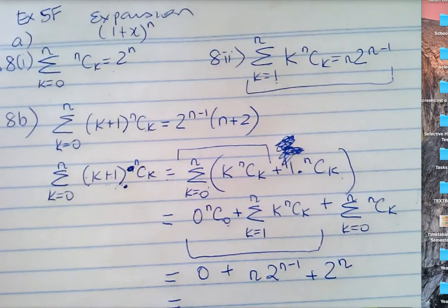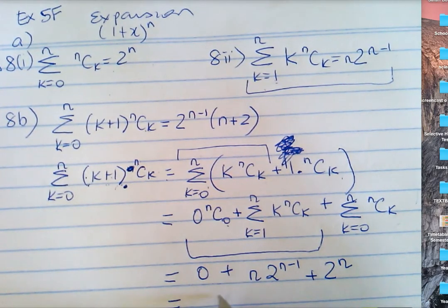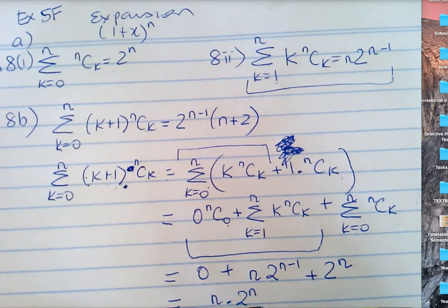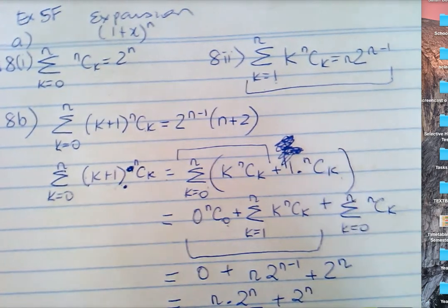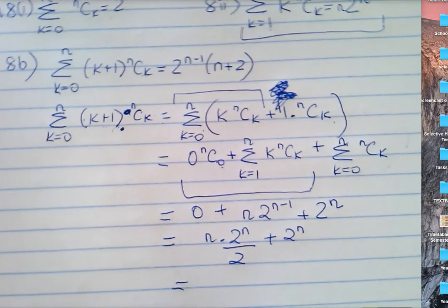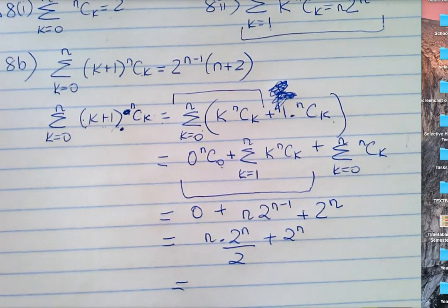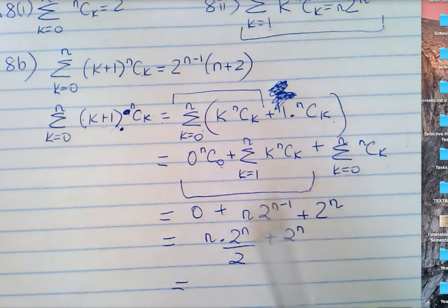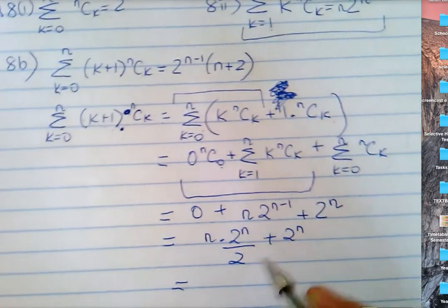Now, how can I write 2 to the power of n minus one? n times 2 to the n over 2, plus 2 to the n. You can take a common factor. We have to show it equals 2 to the n minus one times n plus 2. They want 2 to the n minus one out the front. Isn't that the same as 2 to the n minus one times n plus 2 to the 1?